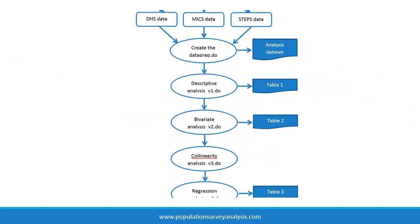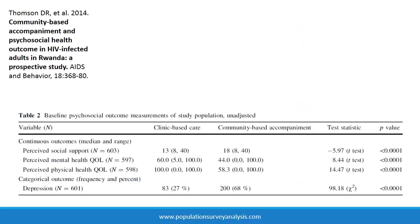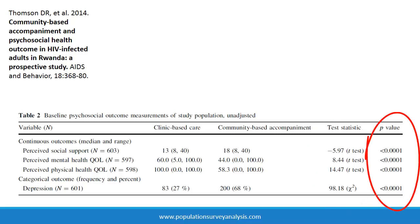In the bivariate analysis, we look at relationships between each of the covariates and the outcome using statistical tests. This step can serve as a filter, helping us decide which variables are worth testing in a multivariable model. We also use bivariate statistics to make comparisons — for example, to test if an intervention group and a comparison group had a similar distribution of age and gender, which provides evidence about whether we can fairly compare the two groups. In a manuscript, we usually report bivariate statistics in Table 2.